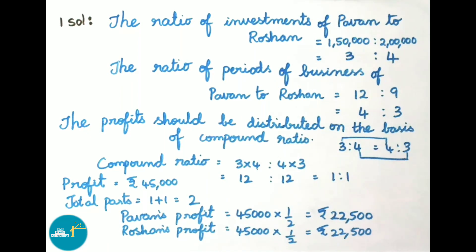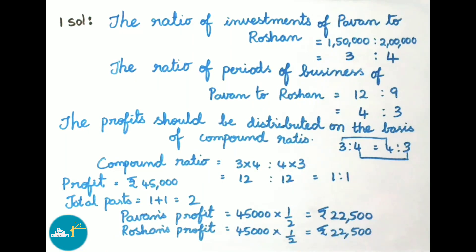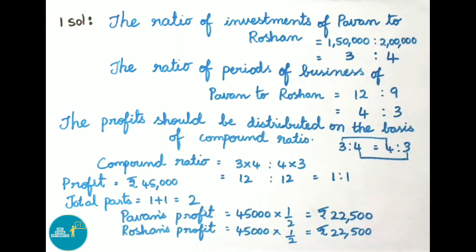The given profit is 45,000 rupees. Total parts equals compound ratio 1 plus 1, that is 2. So the profit must be divided into 2 parts. Pawan's profit equals 45,000 into 1 by 2, that equals 22,500 rupees. Therefore, Pawan's and Roshan's profit is 22,500 rupees each.